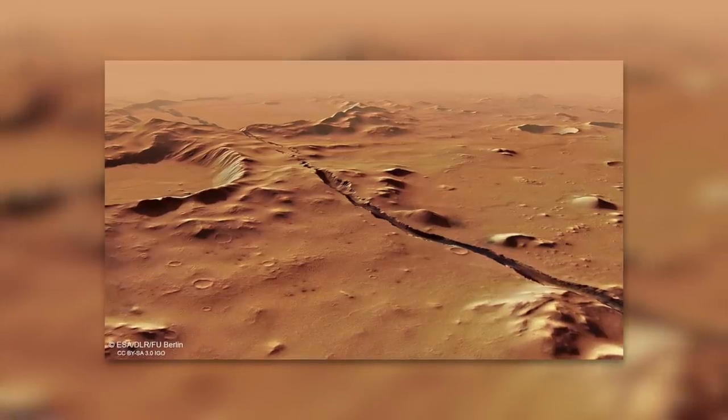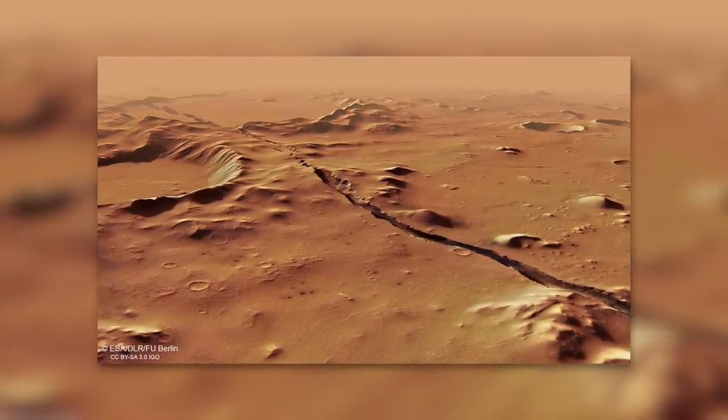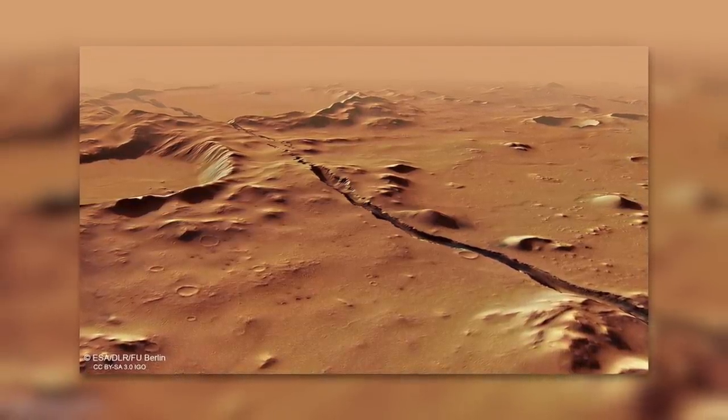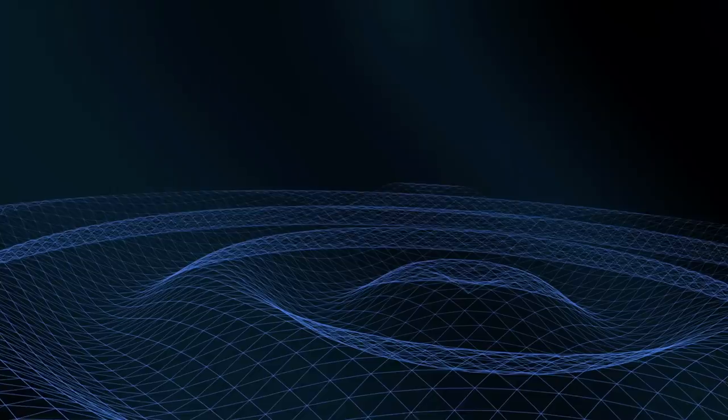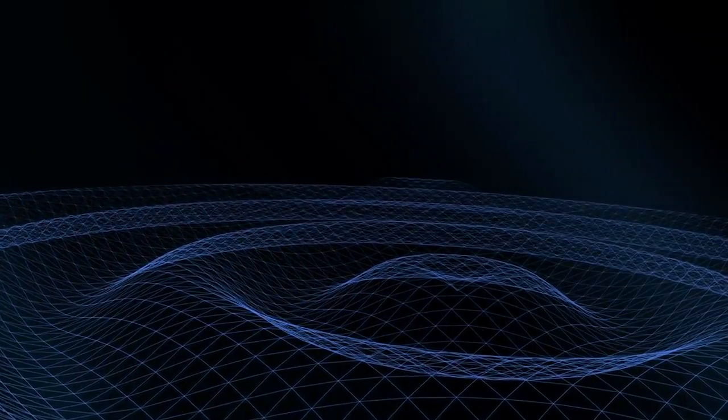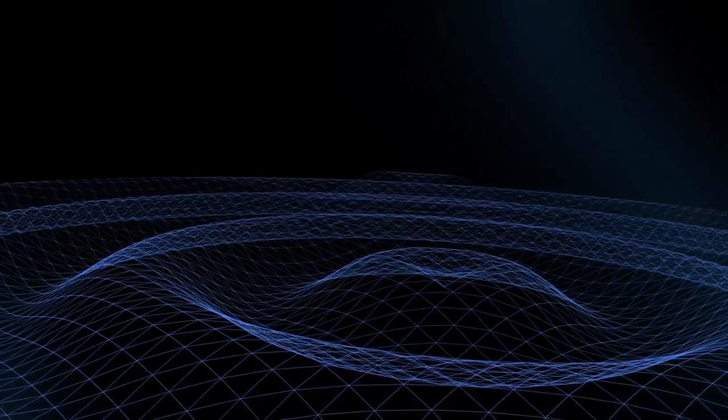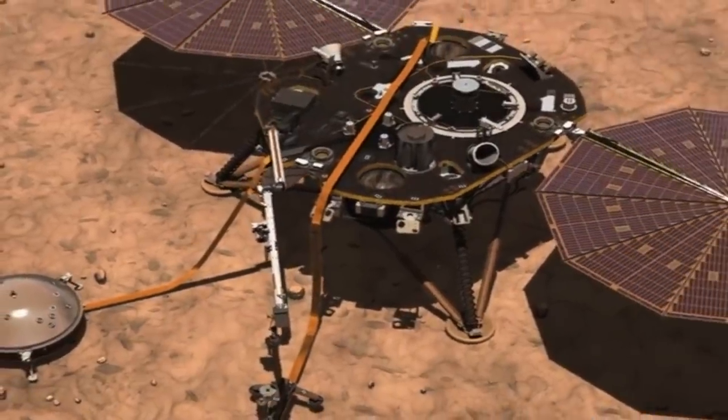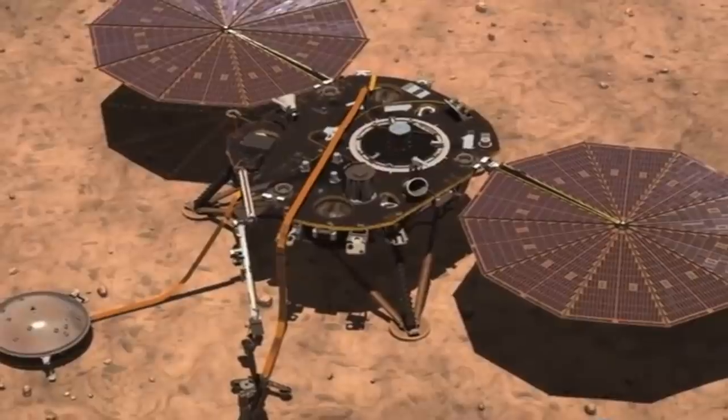Two of the quakes occurred near an area called Cerberus Fossi, where the fractured ground indicates volcanic activity over the last 10 million years. This seismic activity could be due to the remains of this volcanic activity. However, InSight has yet to discover any of the really strong quakes. The larger quakes seem to be less frequent at this time than NASA expected.